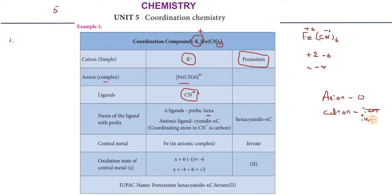This is a cationic complex ending in -ium. The anionic ligand cyanide has the ligand name cyanido - spelled C-Y-A-N-I-D-O. So with prefix hexa, it becomes hexacyanido. In this case, carbon donates the electron, not nitrogen. So KC is like this: x equals 6, cyanido is the anionic ligand, we add O.